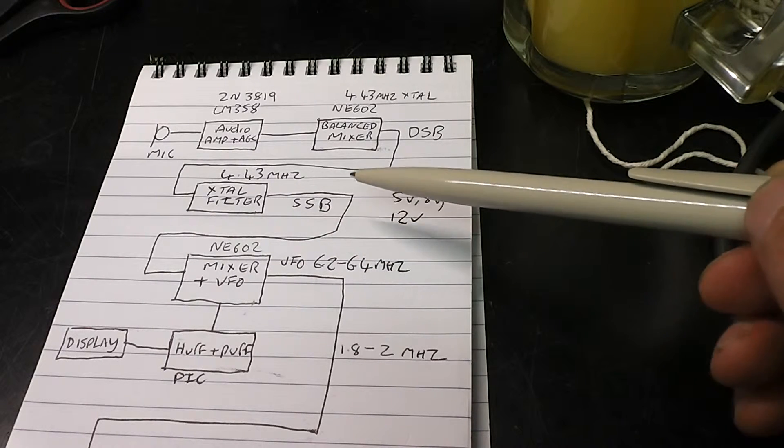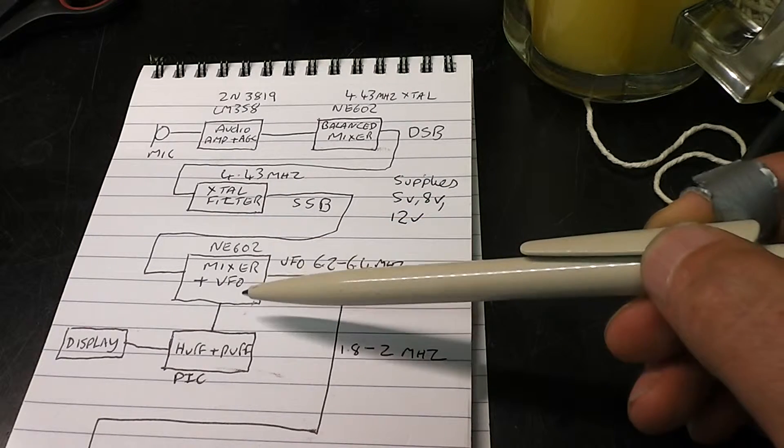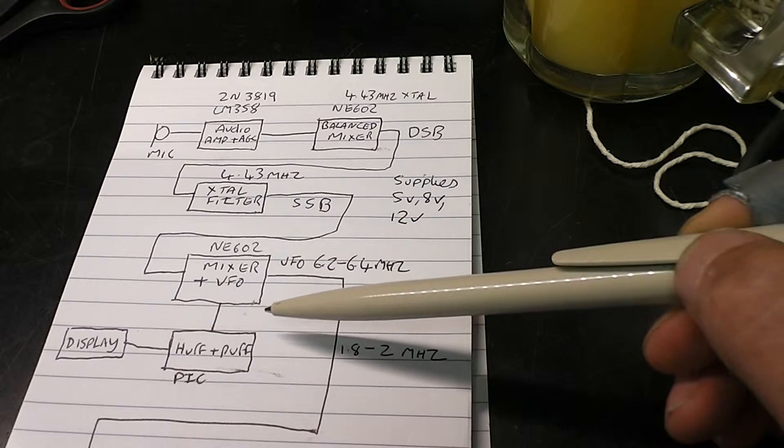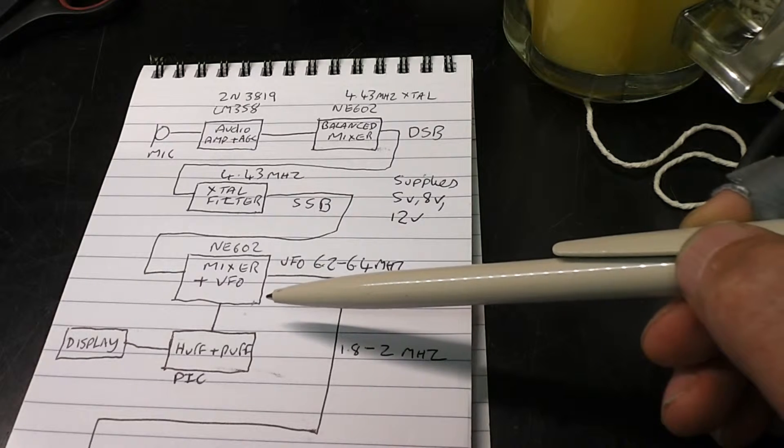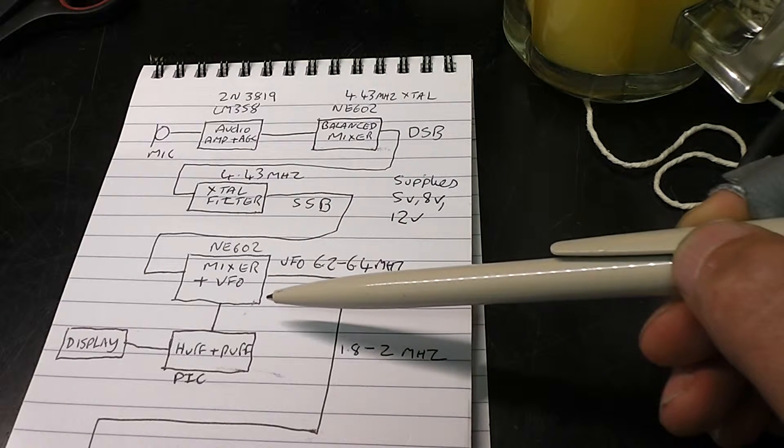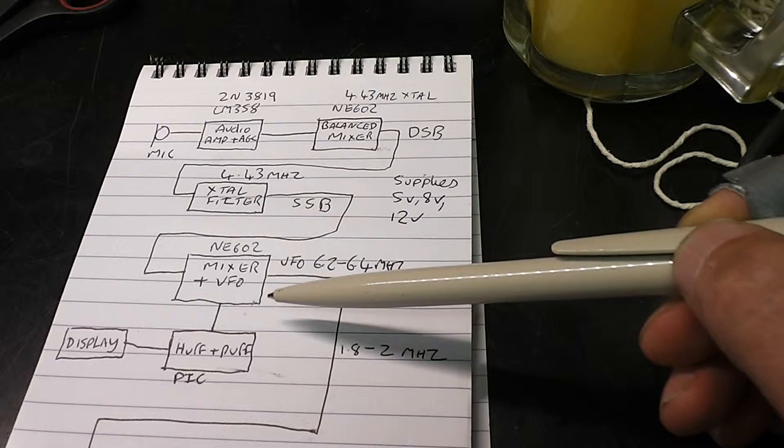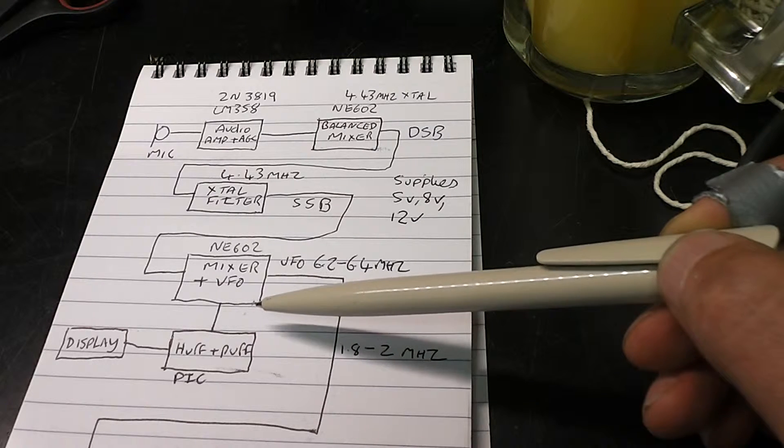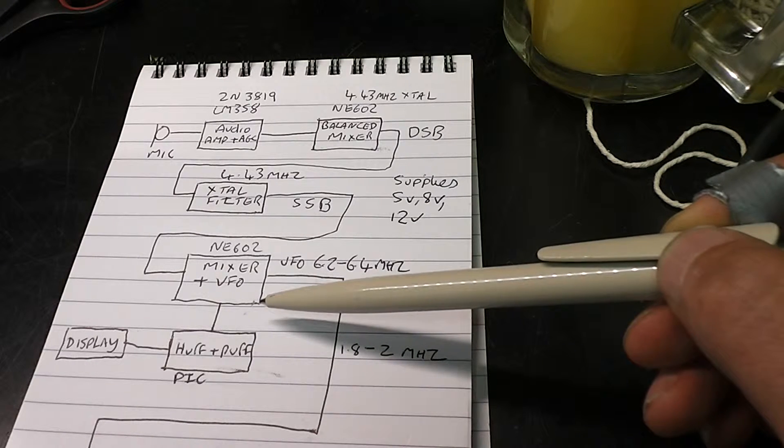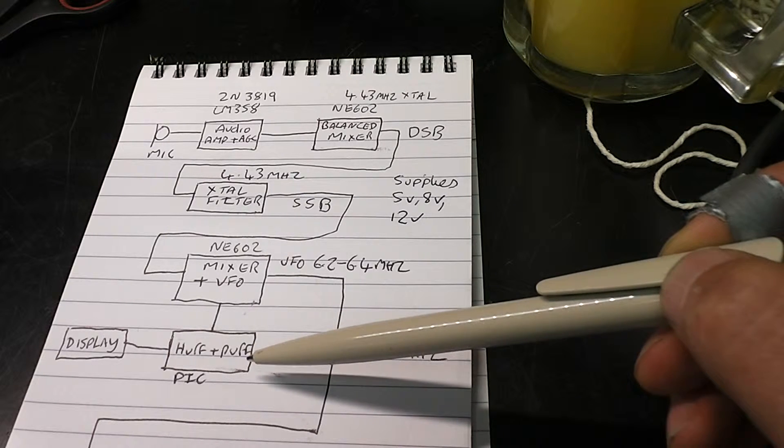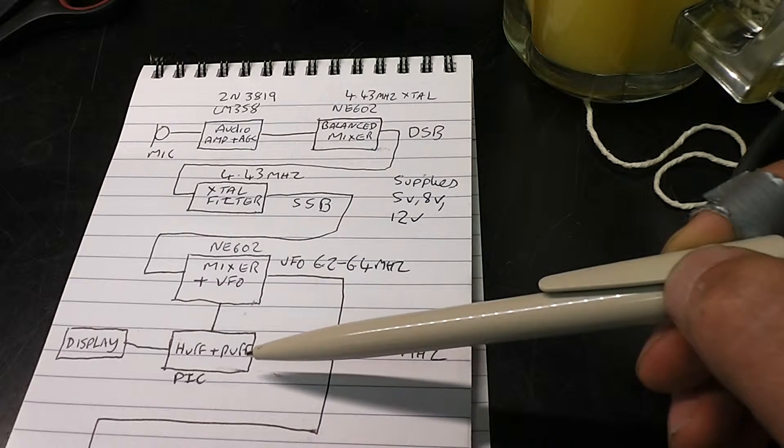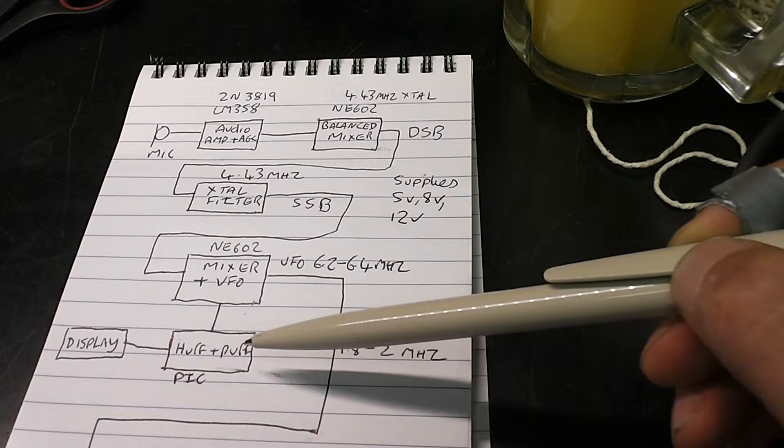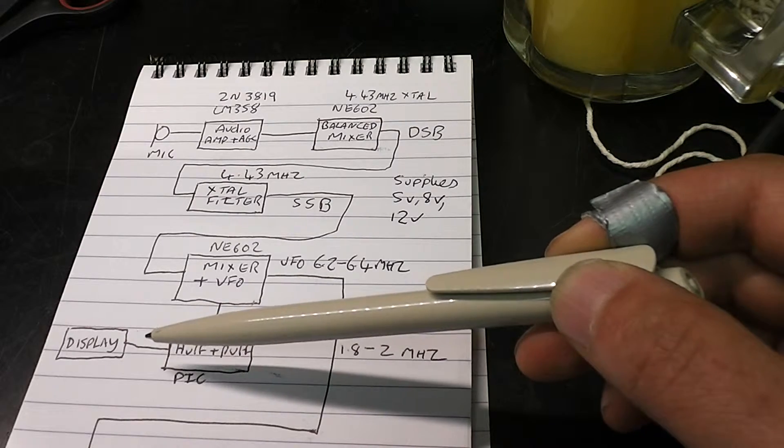The 4.43 single sideband signal is then fed into a mixer. The VFO runs at 6.2 to 6.4 MHz, so that mixes it back down to top band. It has to be on the high side to get lower sideband for top band. The VFO is tuned electrically by varicaps and is stabilized by a huff-puff circuit which pushes the VFO back on frequency if it goes off, and also provides a display of the frequency you're on.